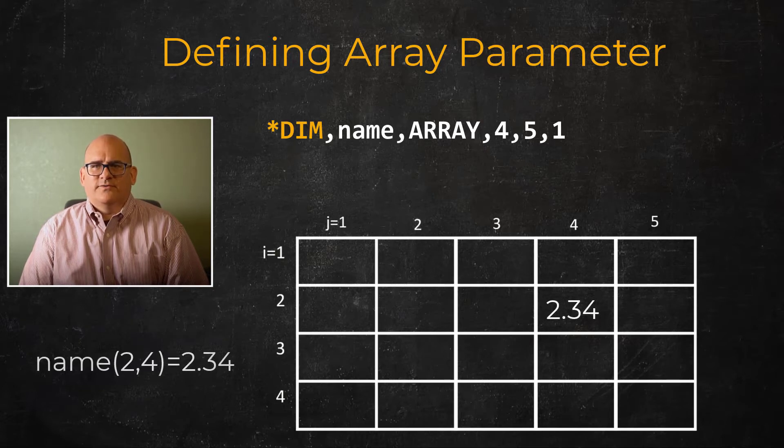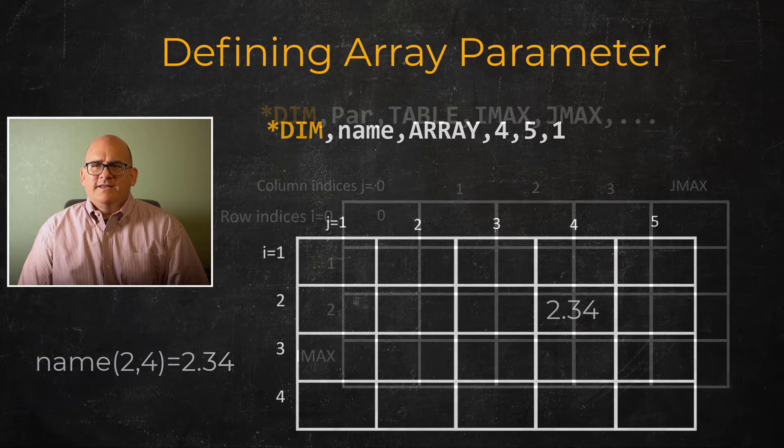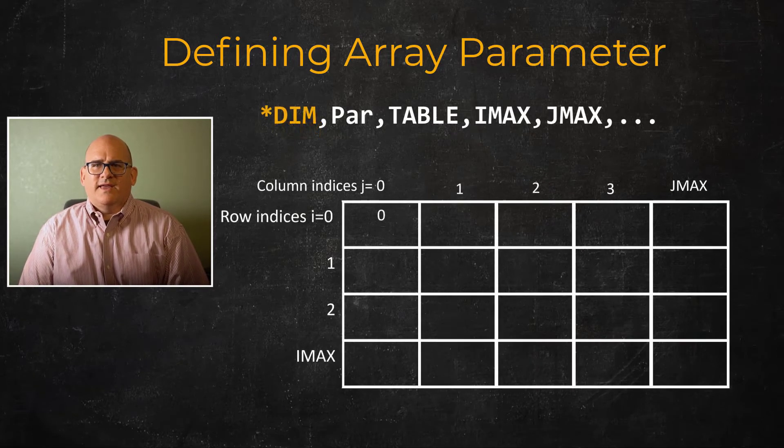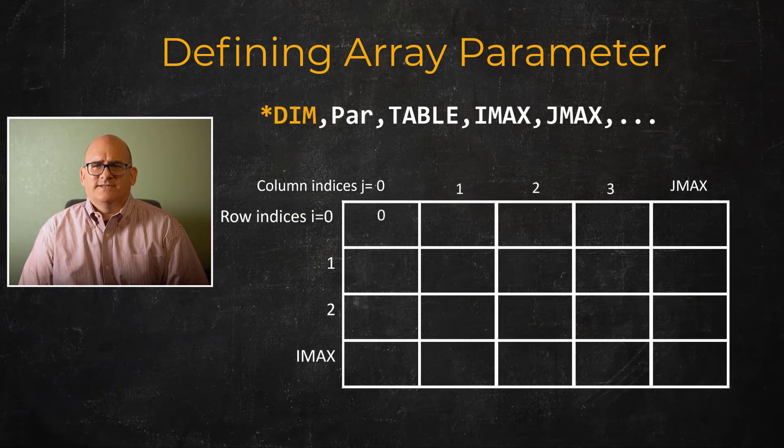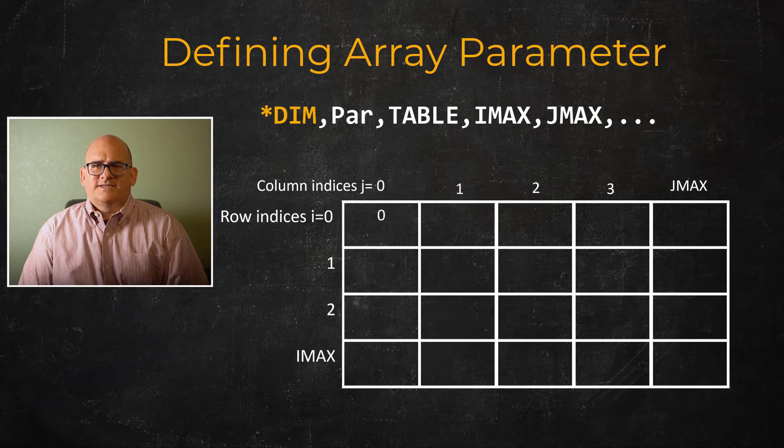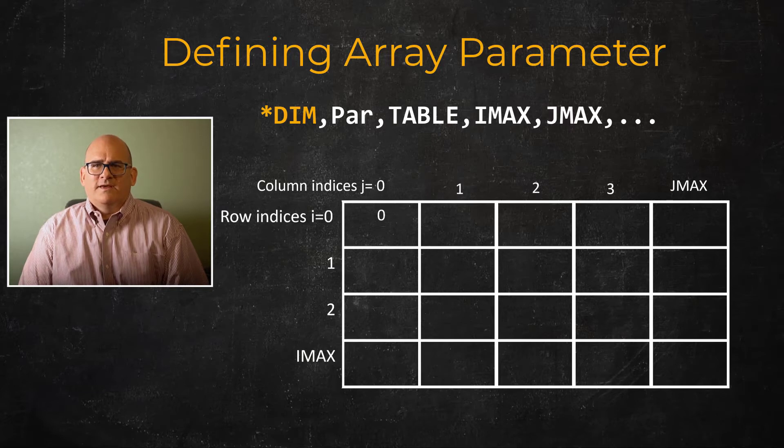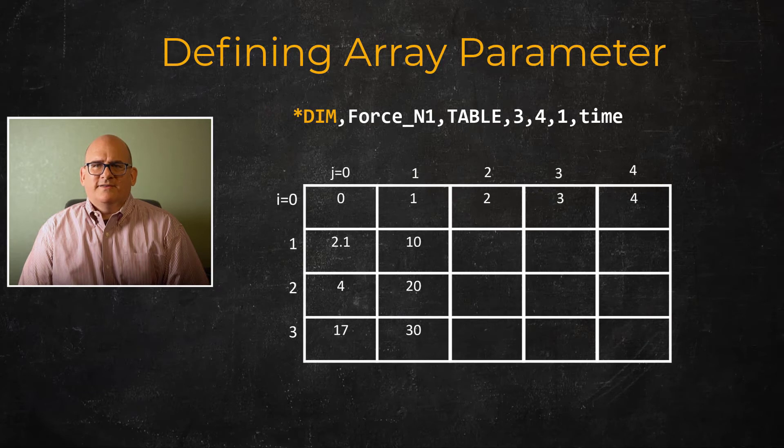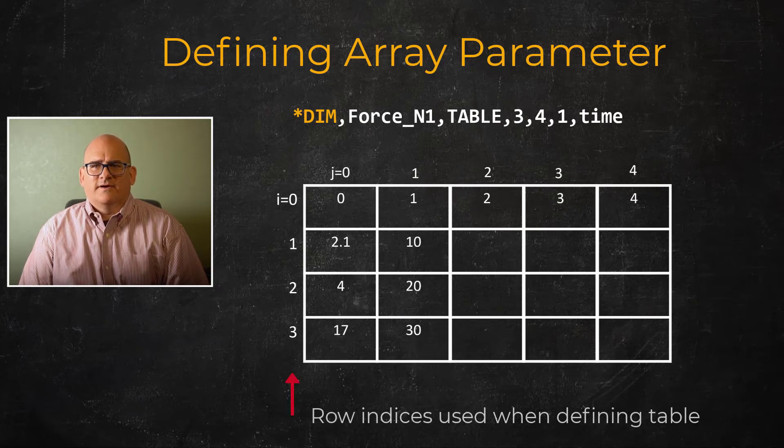In this example, the location name 2 comma 4 holds the value of 2.34. Tables are slightly different in that they have an accessible index of number zero. The regular indices start at zero and are integers, but the zero row and column, for example, can have a non-integer and ever-increasing value when defining the table. The indices are used when table elements are given a value, but when accessed, zero row and column are used.